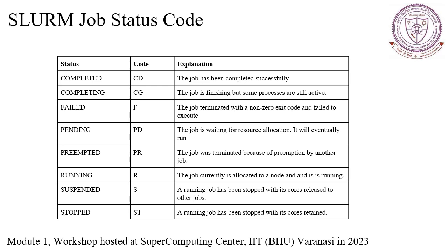Preempted (PR) — when a job is preempted it means it was interrupted or forcefully stopped by the scheduler to make room for a higher priority job. Preemption occurs when a higher priority job needs resources that are currently occupied. Running (R) — the running status indicates the job or job step is currently executing on allocated resources, with tasks actively running and utilizing assigned computing resources.